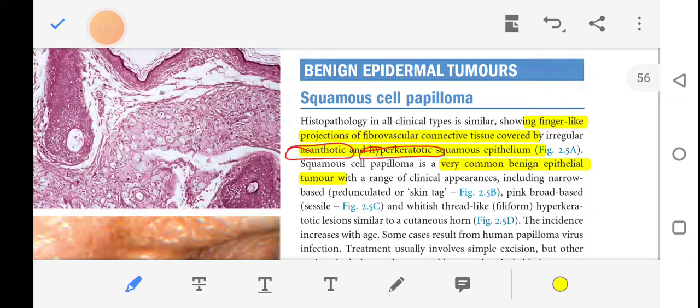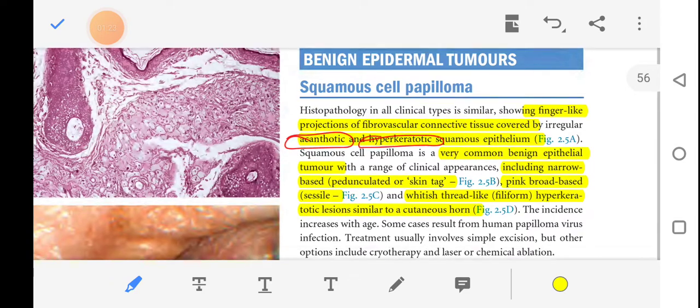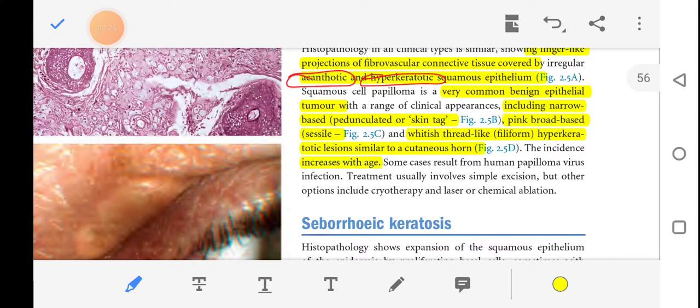It can be narrow-based, pedunculated or skin-tagged, or pink broad-based, sessile or whitish thread-like, filiform, hyperkeratotic lesion similar to a cutaneous horn.